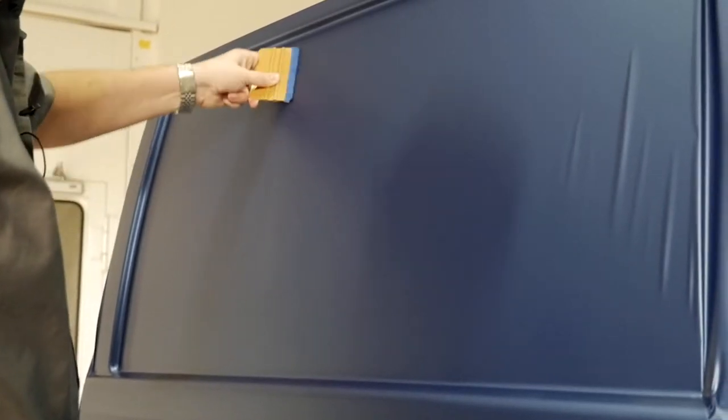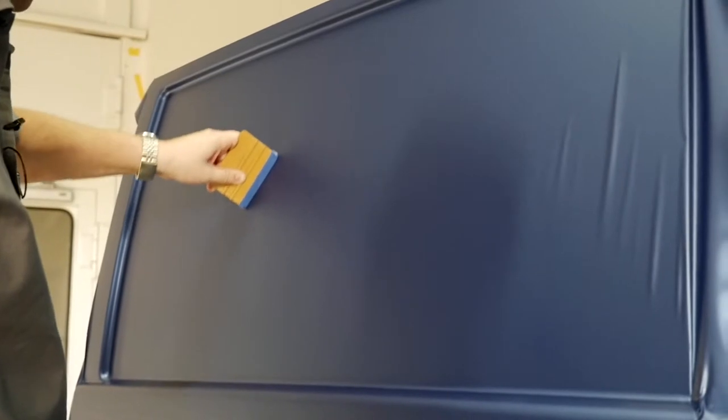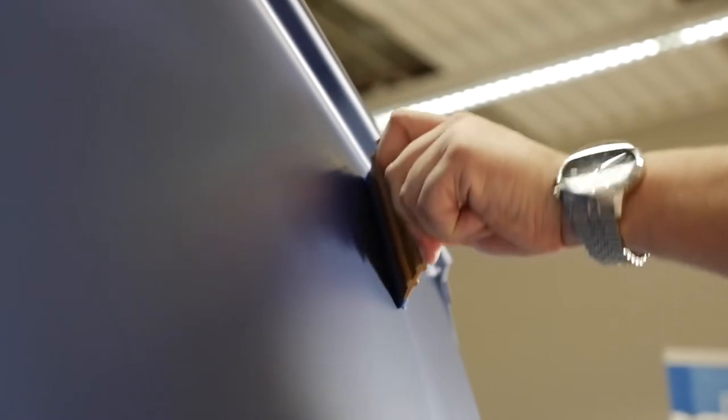Once the recess edges are complete, fix the film to the remaining flat area with high, even pressure. Apply with long, overlapping strokes and ensure that the squeegee is in constant contact with the film.